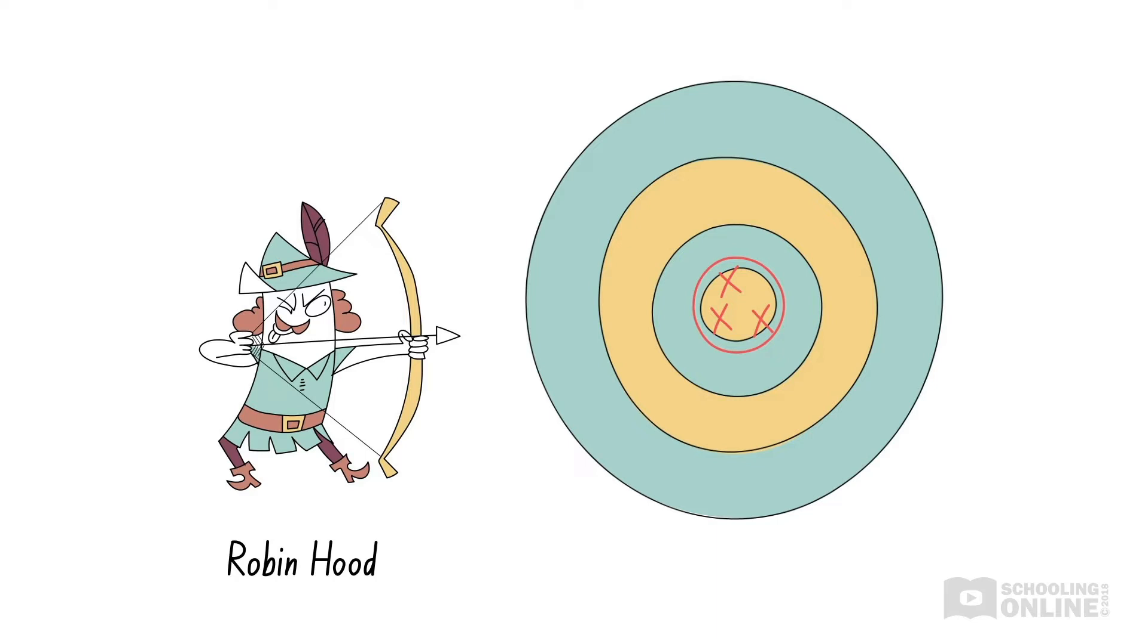These slight variations in Robin Hood's shots are due to random errors. He is a reliable archer since the size of these random errors is very small.